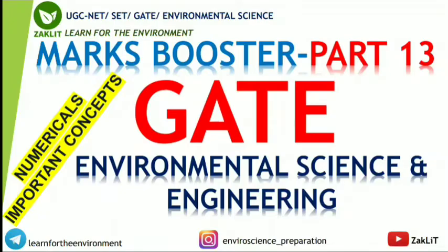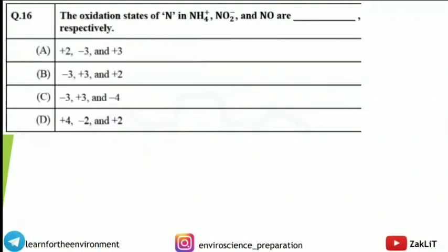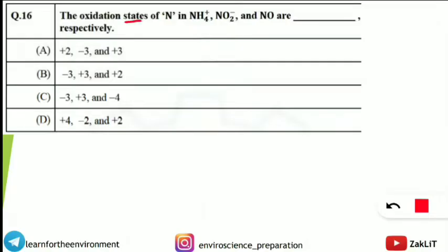Without wasting much time, let's get started. Our first question is from Environmental Chemistry — no need to worry if you are weak in chemistry, we will solve it with very easy and simple concepts. The question asks: what are the oxidation states of nitrogen in NH4+, NO2-, and NO, respectively? We have to find the oxidation state of the nitrogen atom in these three molecules and ions.